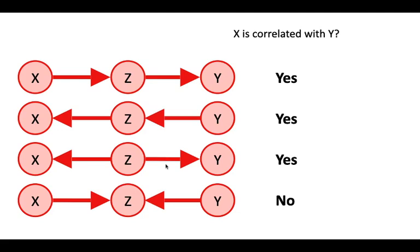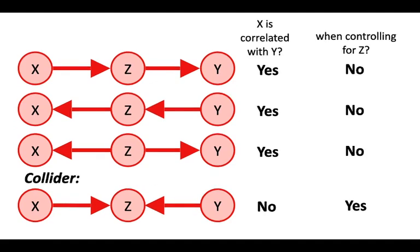Now think about what would happen if we controlled for z, either with an experiment or statistically. In each of the three cases above, if we controlled for z — if we fixed z — we wouldn't expect to see a correlation between x and y. In the first and second cases that's obvious: x influences z but now we're fixing z, so there's no causal path and no way for information to get from x to y. In the third case, if z is always the same, we remove those causal effects, and x and y wouldn't be correlated.